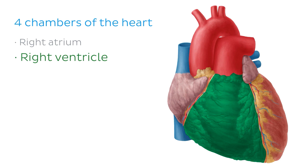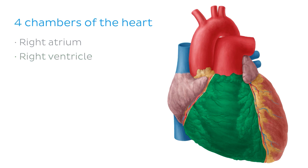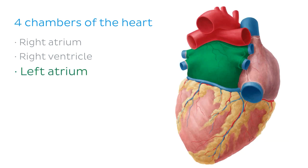When the right ventricle contracts, the deoxygenated blood travels into the lungs, where it gets rid of carbon dioxide and picks up oxygen, becoming oxygenated blood. When it returns to the heart it enters the third chamber, the left atrium. This image shows us the heart from a posterior view with the left atrium highlighted in green.